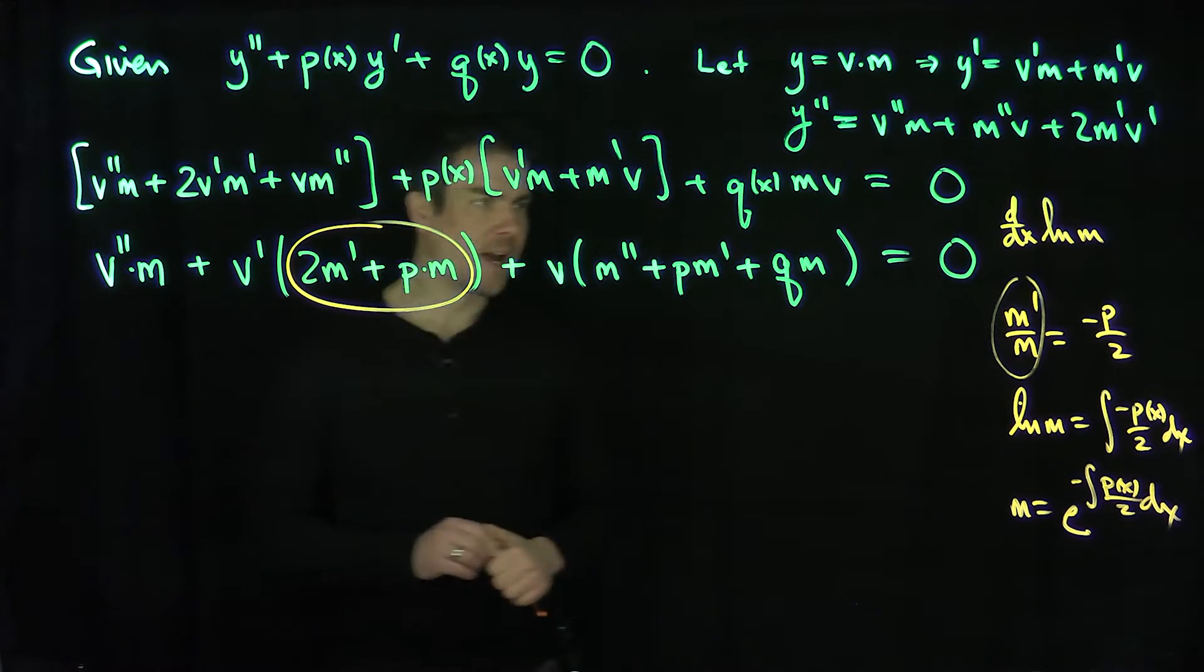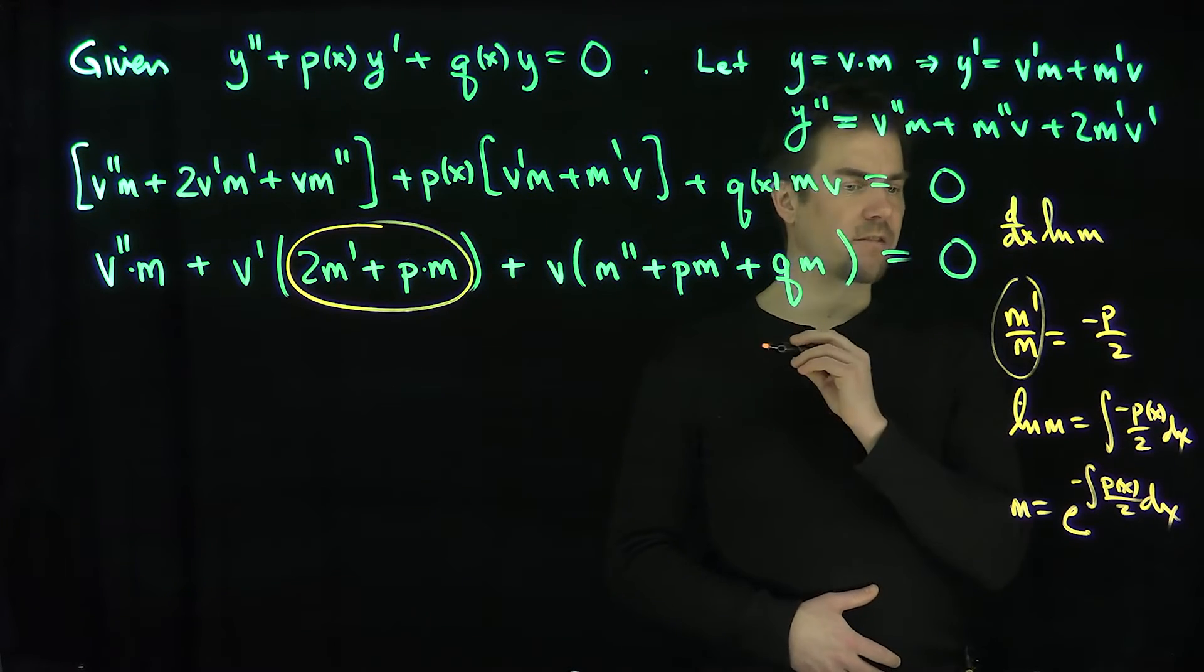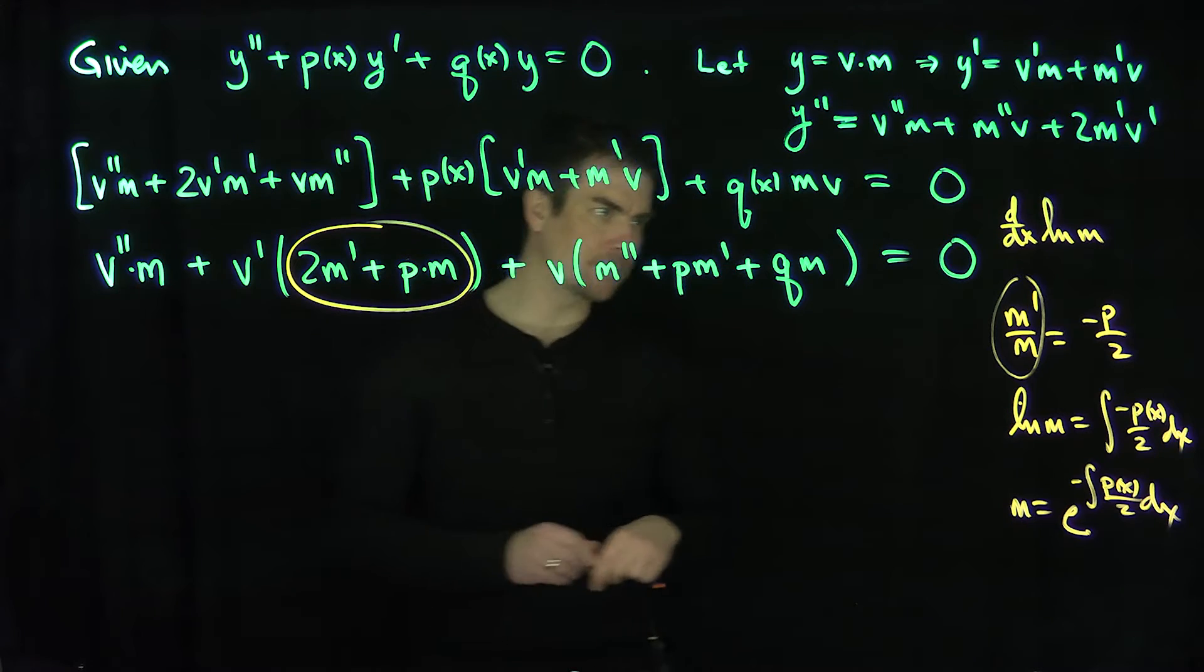And therefore m is e to the integral of the negative sign of p of x over 2 dx. So that's going to be my m function over here. And the key feature about m is that m prime over m is negative p over 2. So we're going to keep that relationship in the back of our mind.